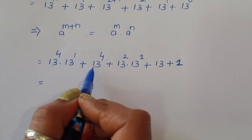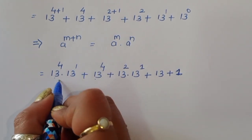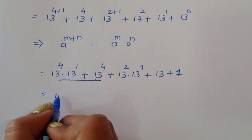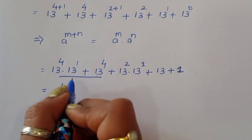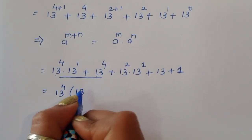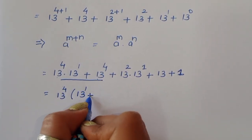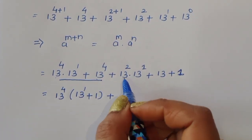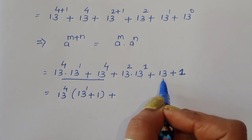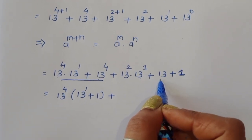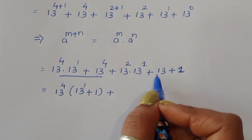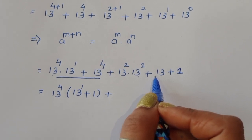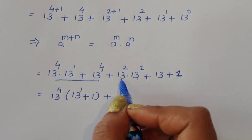Now we can see 13 power 4 appears in two terms, so we can take 13 power 4 as a common factor. Taking 13 power 4 common, the remaining left term is 13 power 1 plus 1. Then looking at the remaining terms — 13 power 2, 13 power 1, and 13 — we can take 13 as common here.